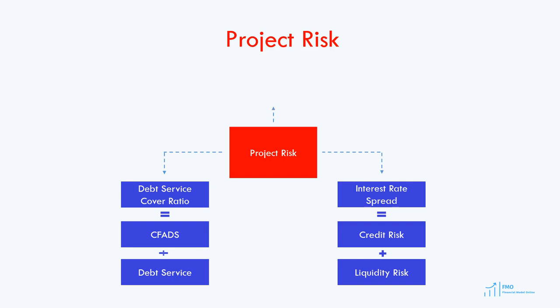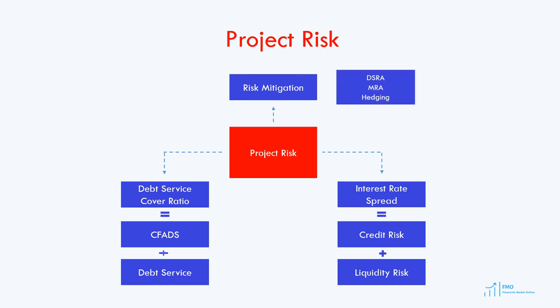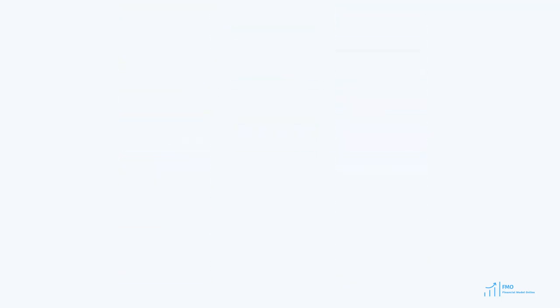Finally, risk mitigation measures that lenders take, particularly during project operations, will also impact the debt size. Often, lenders require the project to fund and maintain the debt service reserve and maintenance reserve accounts during the debt tenor. Since these accounts have to be funded by cash flow that remains after debt service, there have to be enough CFADS to pay the debt service and then fund the reserve accounts. So if cash flow after debt service is insufficient to fund the reserve accounts, debt size has to be reduced.